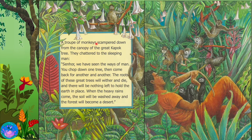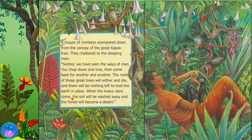A troop of monkeys scampered down from the canopy of the great kapok tree. They chattered to the sleeping man: Senor, we have seen the ways of man. You chop down one tree, then come back for another and another. The roots of these great trees will wither and die, and there will be nothing left to hold the earth in place. When the heavy rains come, the soil will be washed away, and the forest will become a desert.